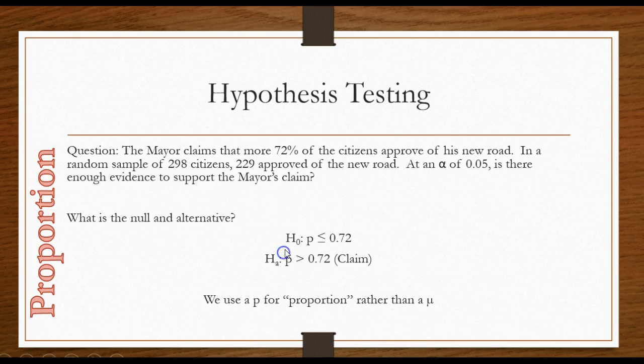Alright, so there's a t situation. Here's a situation where I have a proportion hypothesis test. The mayor claims that 72% of the citizens approve of his new road. In a random sample of 298 citizens, 229 approved of the new road. And at an alpha of 0.05, is there enough evidence to support the mayor's claim? First, he said more than 72, so he says it's greater than 0.72, so that's the alternative. The null would be less than or equal to 0.72. Note we use a p here because we're talking proportions.